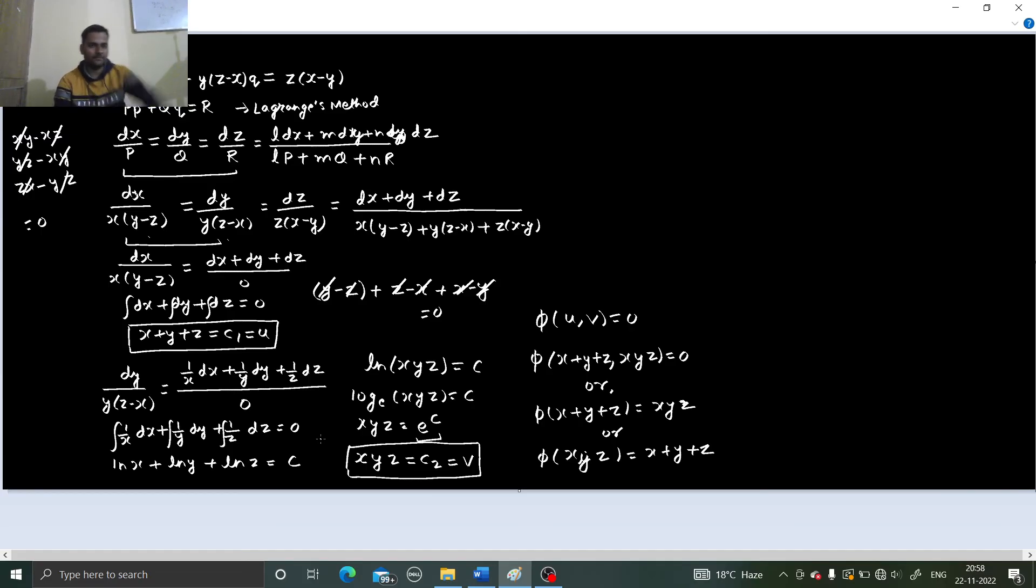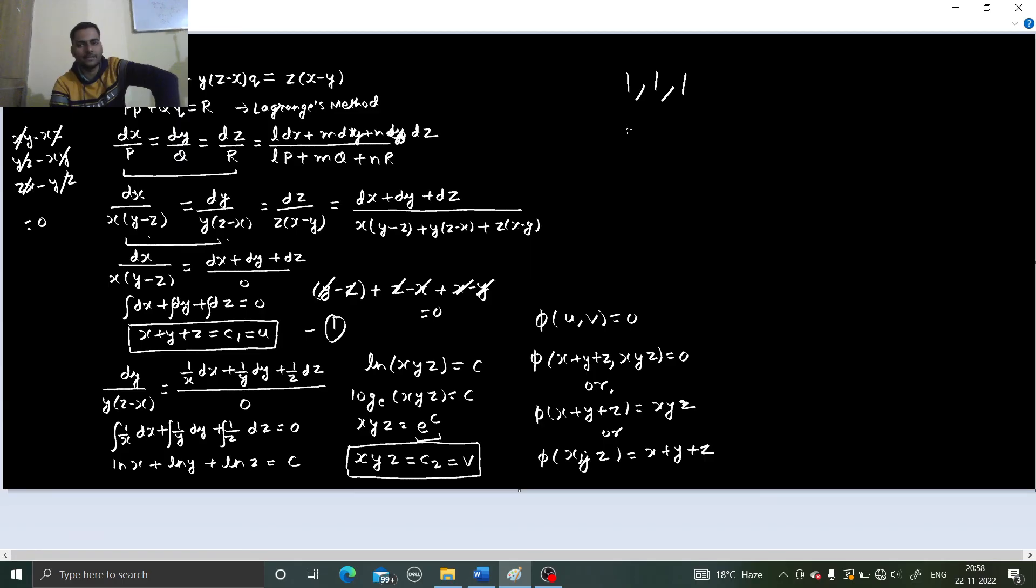So we started off the problem with method of grouping and method of multipliers. If the method of grouping does not work, we choose multipliers. The first set of multipliers which I chose was l, m and n, each of them equal to 1. Then simplified it, sorted, I got the first one. Then the second set of multipliers, because I saw if I remove that x, y and z and add them, I am going to get 0. So that gave me 1/x, 1/y and 1/z as the second set of multipliers. And the game was easy after that. Log property you all know: log a plus log b equals log ab. And if log k to the base a is c, then k can always be written as a^c. These are basic things which you should always keep in mind.